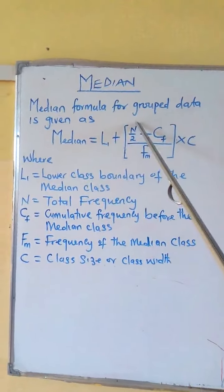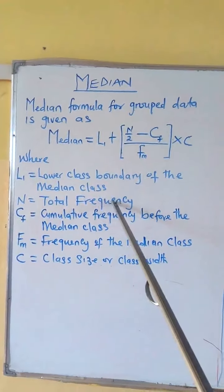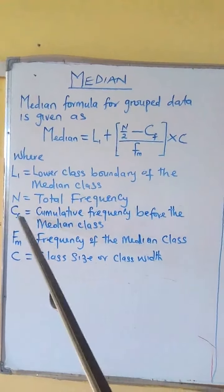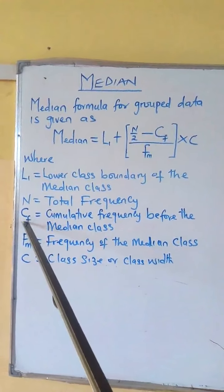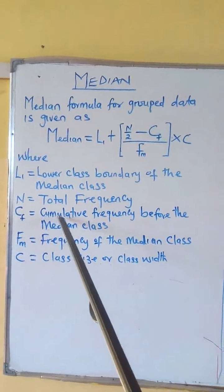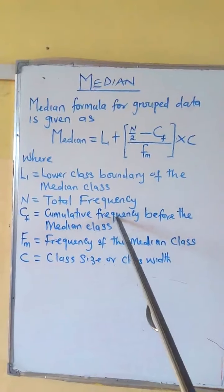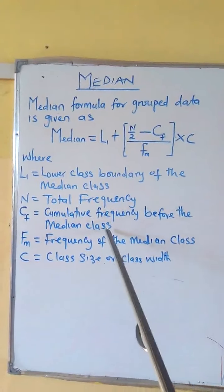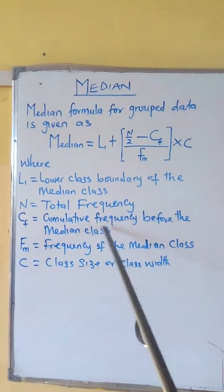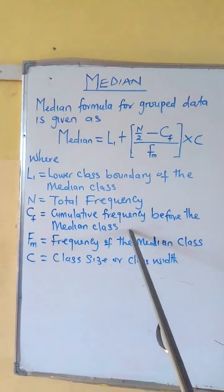N is the total frequency. C subscript F is the cumulative frequency before the median class.